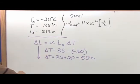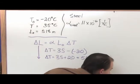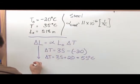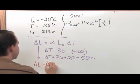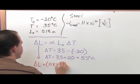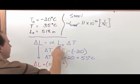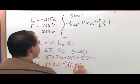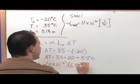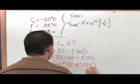So let's go ahead and continue using our equation. We're going to switch colors to make it easier to read. Delta L is going to equal alpha, which is 11 times 10 to the negative 6, times my initial length, which is 518 meters, times delta T, which is 55 degrees Celsius.